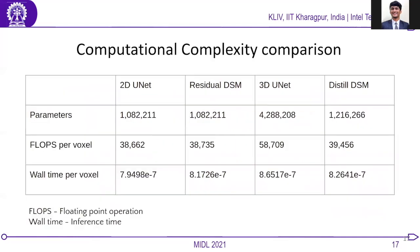Finally, we assessed the computational complexity of the different methods compared. For the sake of comparison, we used total number of trainable parameters, FLOPs per voxel, and walltime per voxel. It can be seen that the number of parameters for 3D U-Net is more than three times that of distilled DSM, whereas we are able to secure a performance comparable to 3D U-Net and sometimes even better. Thank you.